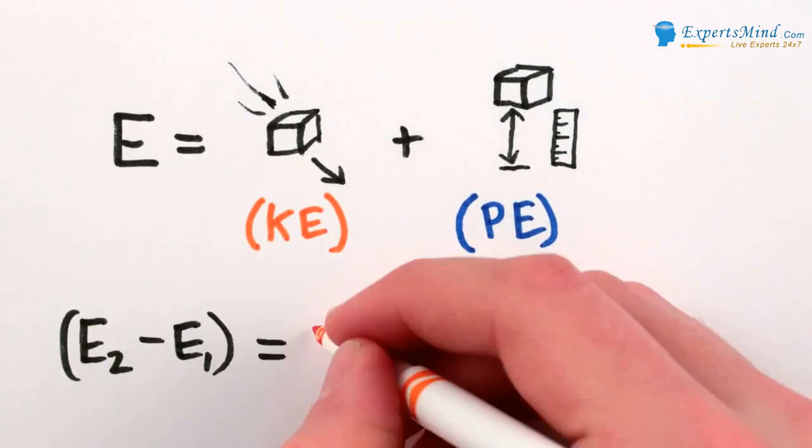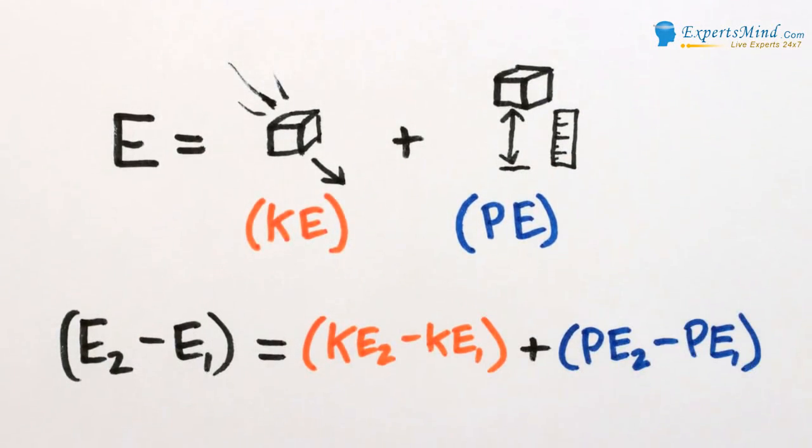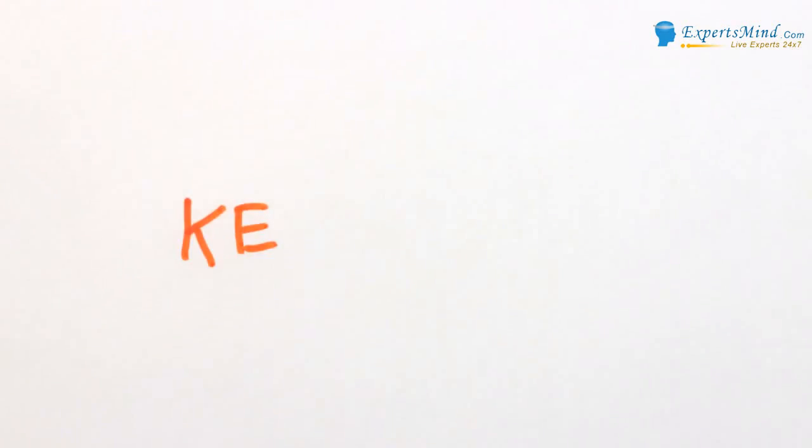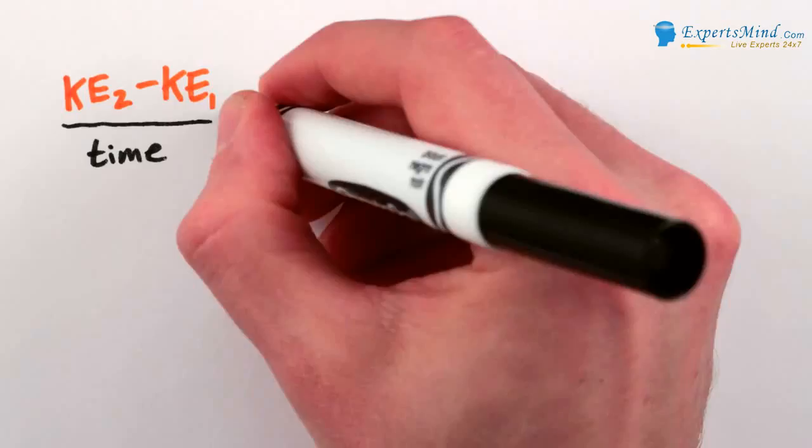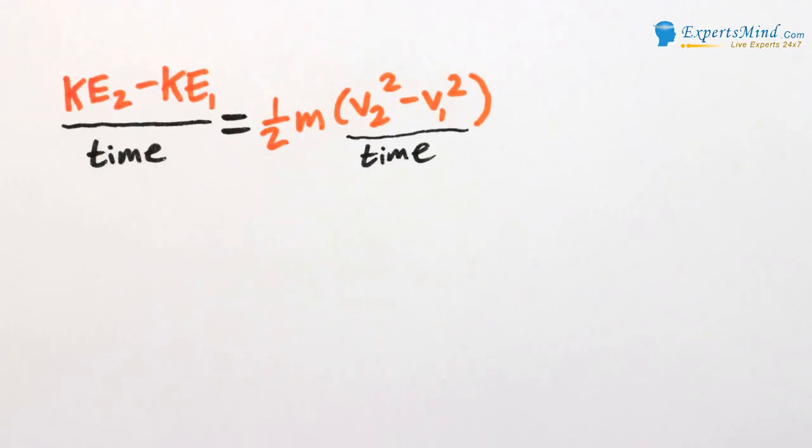So all we need is to find the change in kinetic and potential energies over time, and add them up. We know the kinetic energy of an object is half of its mass times its velocity squared, so the change in kinetic energy over time is just one-half m times the difference of the squares of the velocities.